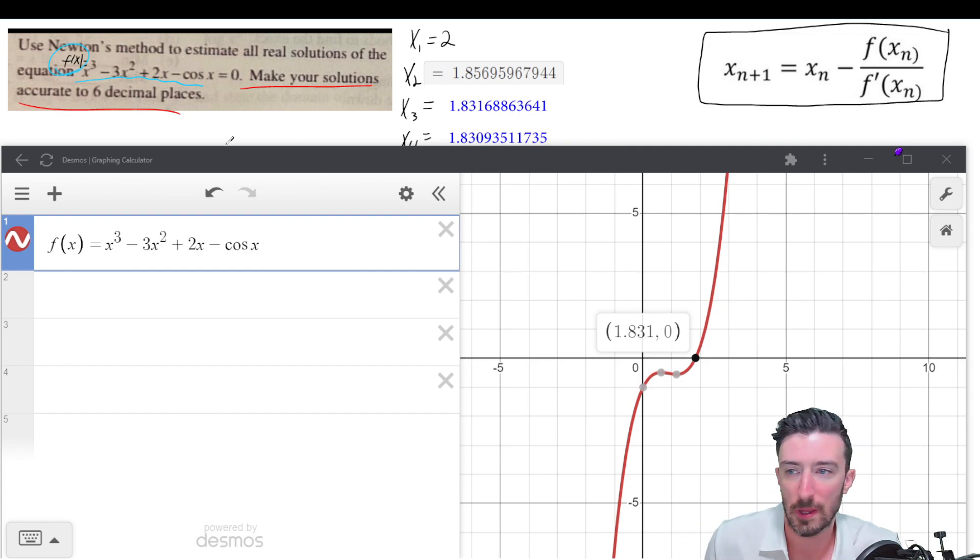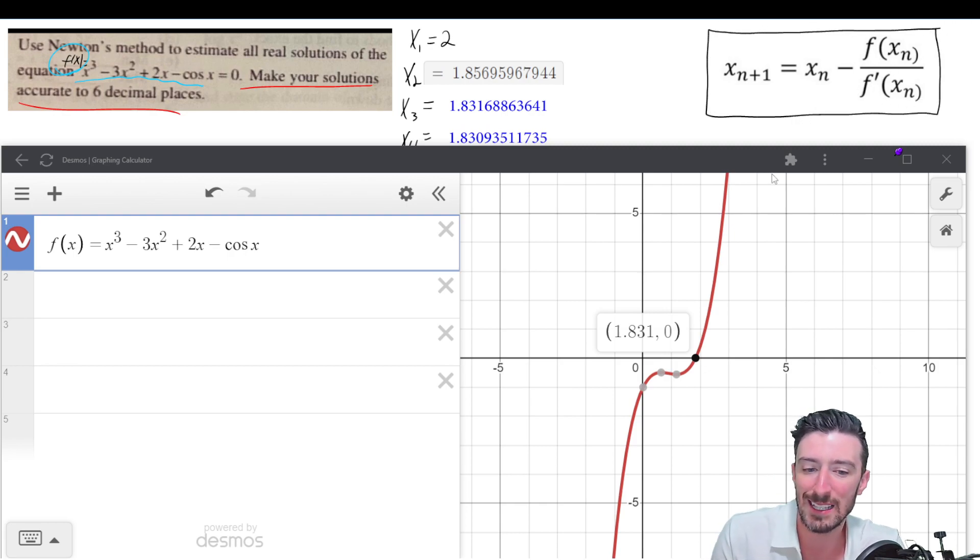But we're going to use Newton's method. So Newton's method requires that you use this formula as a way to guess what the x's are. So because I've already got the graph, I can start off by just guessing something close to 1.831.